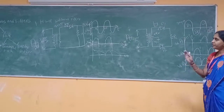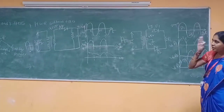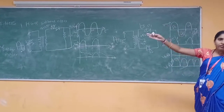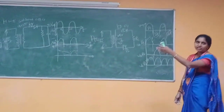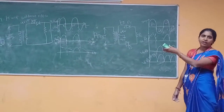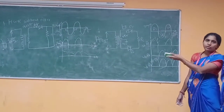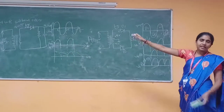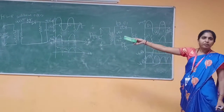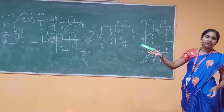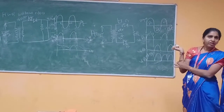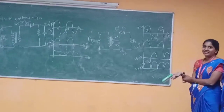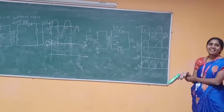Why are we going for a full-wave rectifier when we already have a half-wave rectifier? In the half-wave rectifier, the transformer utilization factor and the ripple factor are very low. The transformer utilization factor is very less in the half-wave rectifier, and the ripple factor is also lower in the half-wave rectifier. So we are going for a full-wave rectifier.